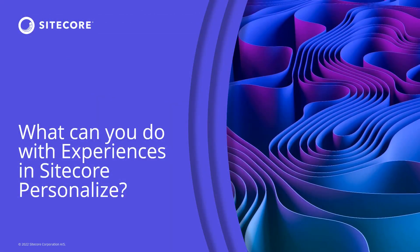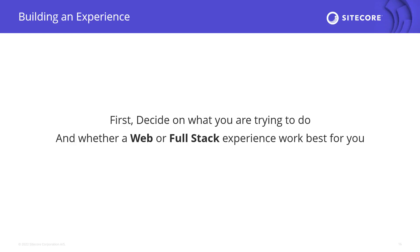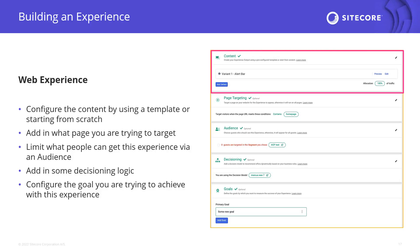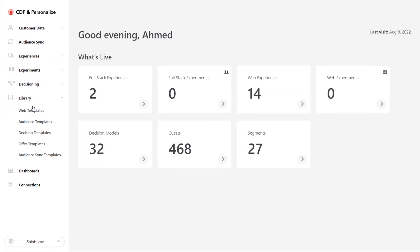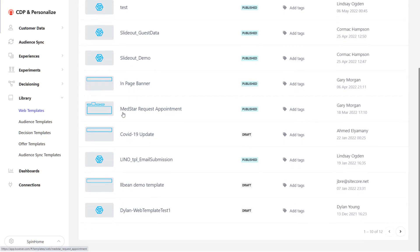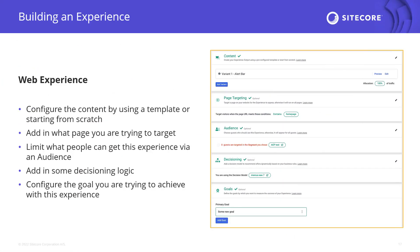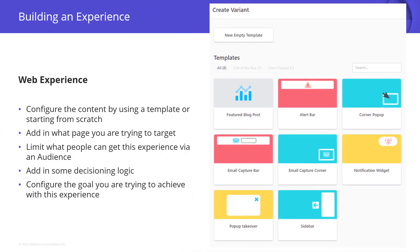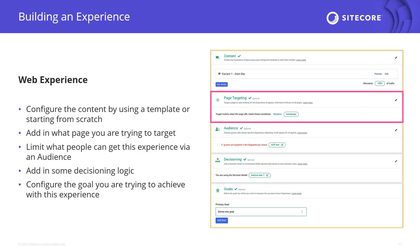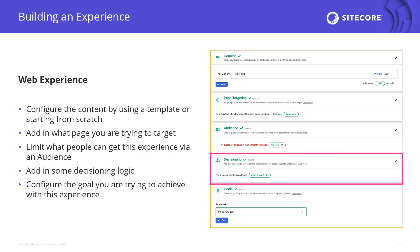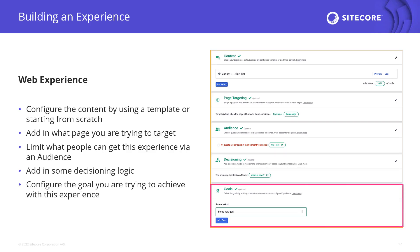In the next part I'll give you a quick introduction to the steps needed to build a Sitecore experience. First, you should decide upfront if you want to build a web, interactive, or triggered experience. On the right you can see the content section — you can either design content from scratch or use a pre-built template. Pre-built templates allow marketers to build personalization quickly without deep CSS or HTML knowledge. Next is page targeting, where you choose which pages the experience appears on. In audience, you can limit the experience to a certain audience with filters. Then you configure decisioning, which we'll cover in another session, and finally goals, which let you track effectiveness and analytics for your experience.